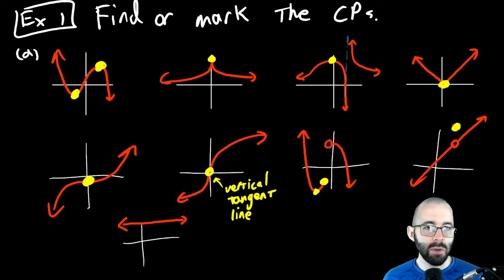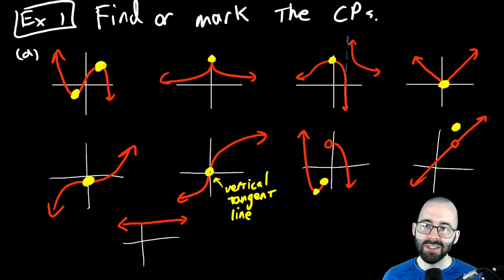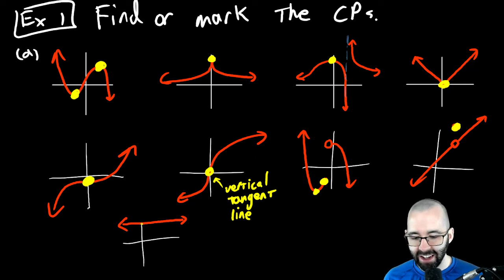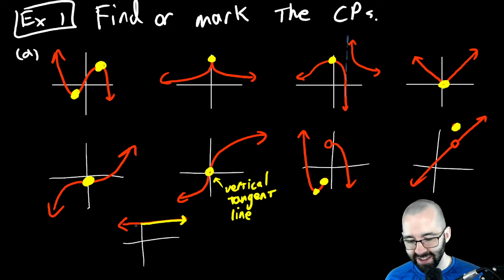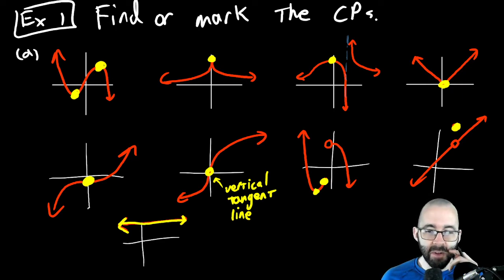Another critical point: the function exists but the derivative does not exist at that point. And for the last one — every single point on the function is a critical point, because this is a horizontal line. Every point on this function has a slope of zero.